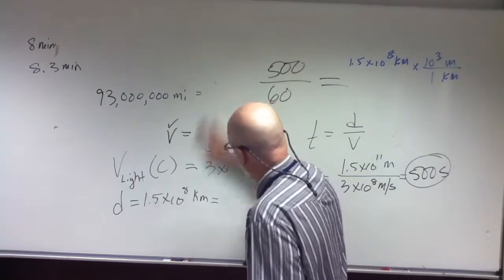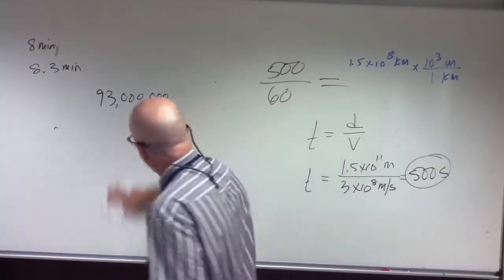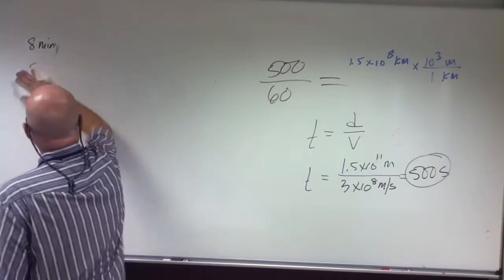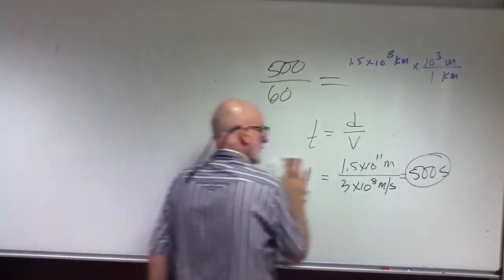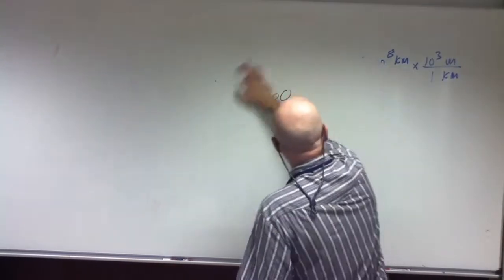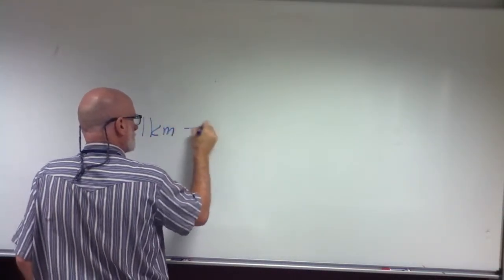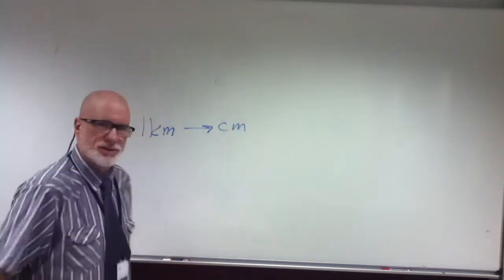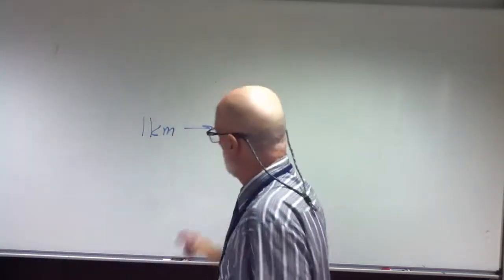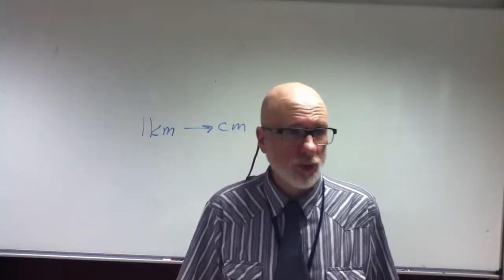So let's do one we just talked about. We'll do one so we don't have 1.38 or something. We'll just do one. One kilometer to centimeters. Now, if you want to write down a couple of rules that you'll actually look at once or twice and then forget them.